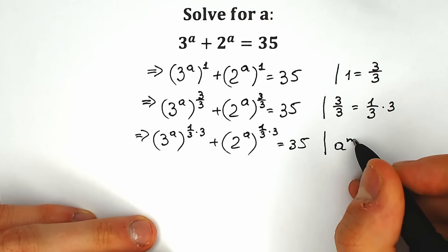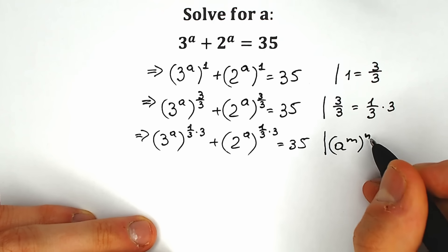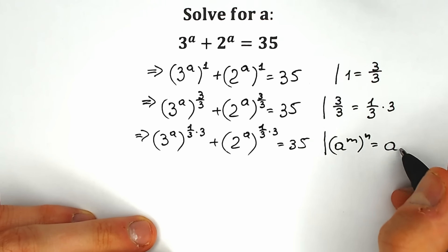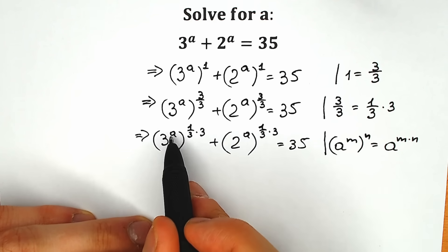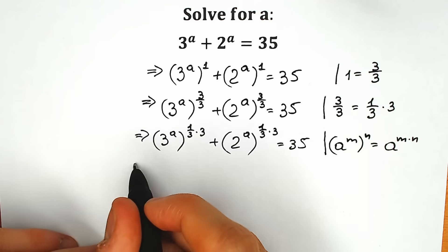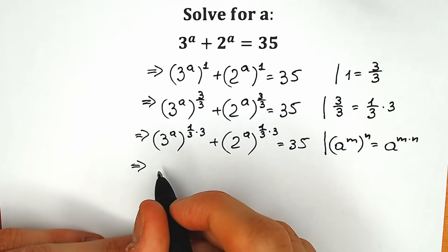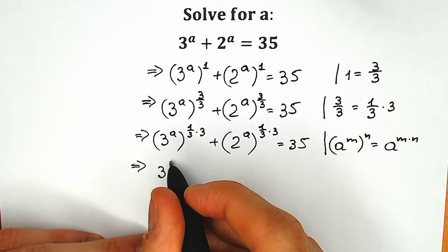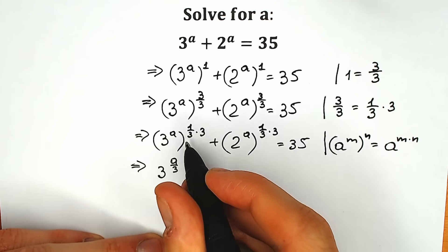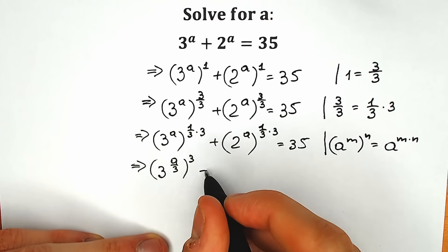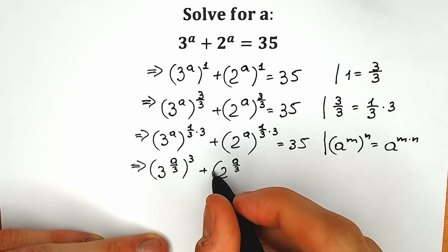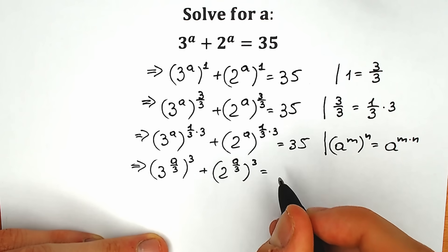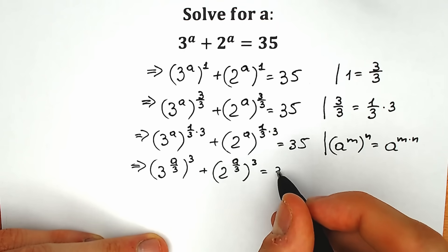Now the trickiest move — this is called the rule of interchange. When we have a to the power m raised to the power n, we can write it as a to the power m times n. So let's multiply 1/3 by a. As a result we have 3 to the power a over 3, raised to the power 3, plus 2 to the power a over 3, raised to the power 3, equal to 35.